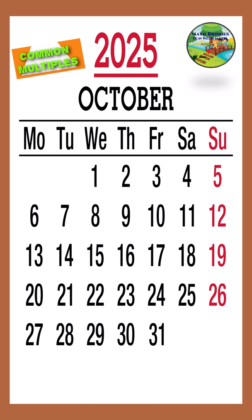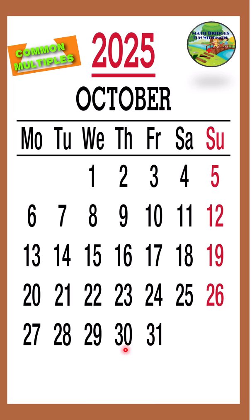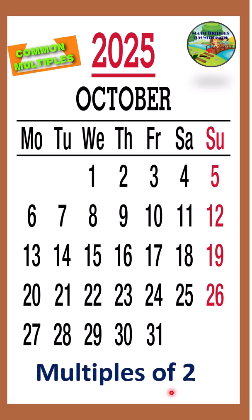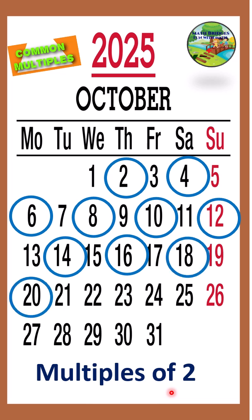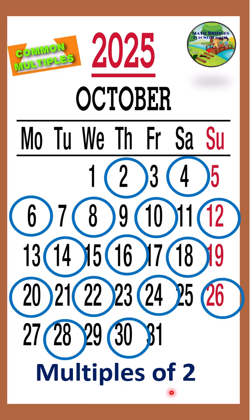Now first what we will do, we will take the multiples of two. I will circle the multiples of two. You can ask the children to take a color pencil of their choice. Let's circle multiples of two: 2, 4, 6, 8, 10, 12, 14, 16, 18, 20, 22, 24, 26, 28, 30. As October is having 31 days, we will get till 30.